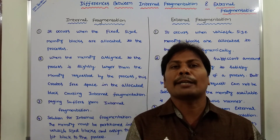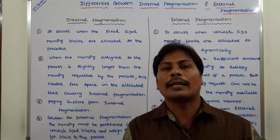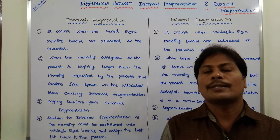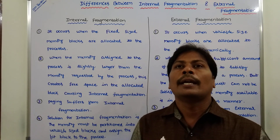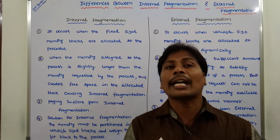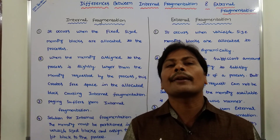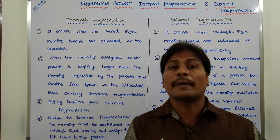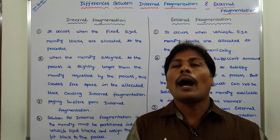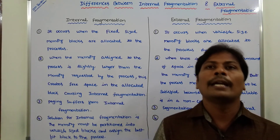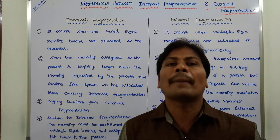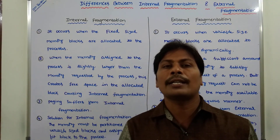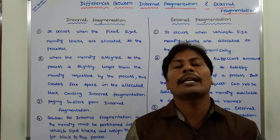Another solution for external fragmentation is paging and segmentation. These solutions allow the process to acquire the physical memory space in a non-contiguous manner — it requires physical memory space, not logical memory space, in a non-contiguous manner. To achieve this, we use paging and segmentation. In total, there are three solutions for external fragmentation: one is compaction, the second is paging, and the third is segmentation.